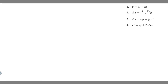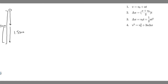In this problem, we're told a certain freely falling object released from rest requires 1.5 seconds to travel the last 30 meters before it hits the ground. Part A: find the velocity of the object when it is 30 meters above the ground. Part B: find the total distance the object travels during this fall. Let's draw what's going on — imagine a ball is dropped, and 30 meters from the ground is the 30-meter mark. That last portion takes 1.5 seconds, and then the ball hits the ground.